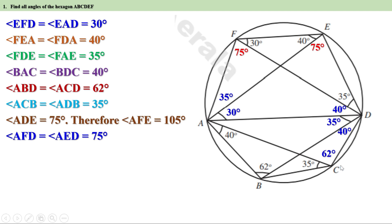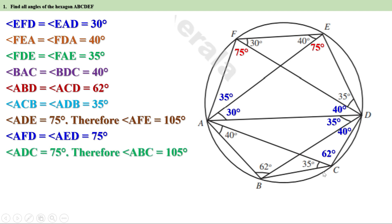Now look at the chord AC. This chord divides the circle into two arcs. Angle ADC and angle ABC are angles on alternate arcs, therefore they are supplementary. Angle ADC equals 75 degrees, therefore angle ABC is 105 degrees. But angle ABD is 62 degrees, therefore angle CBD equals 43 degrees. Since angle CBD equals 43 degrees, angle CAD is also equal to 43 degrees.